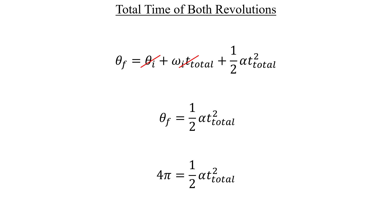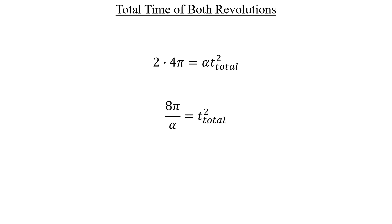At this point, let's solve for the total time by multiplying both sides by two, dividing both sides by alpha, and then we'll take the square root of everything. We don't yet know the value of this angular acceleration alpha, but that's okay. We can use some algebra to get that next.